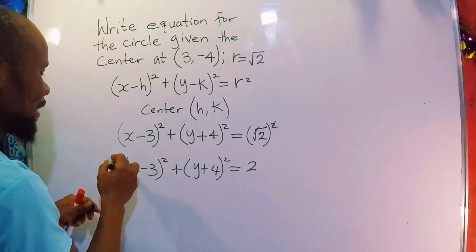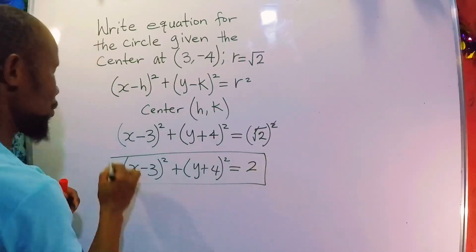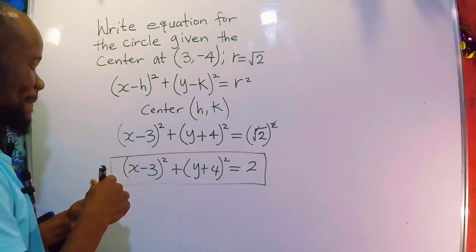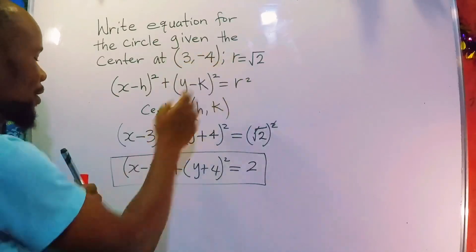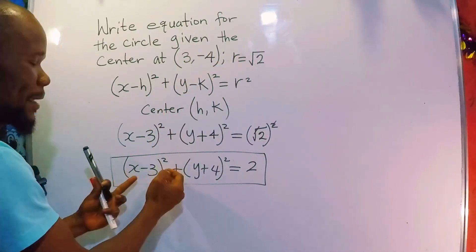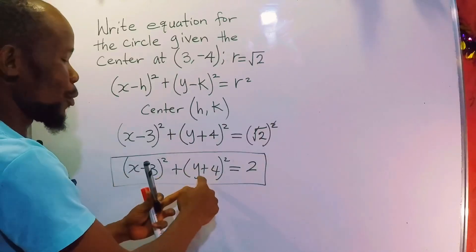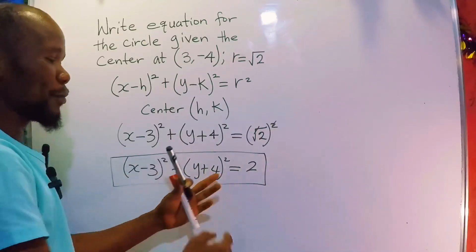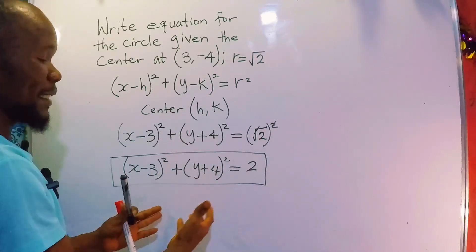So this is our equation. The equation of this circle is: (x minus 3) squared plus (y plus 4) squared equal to 2. So this is it.